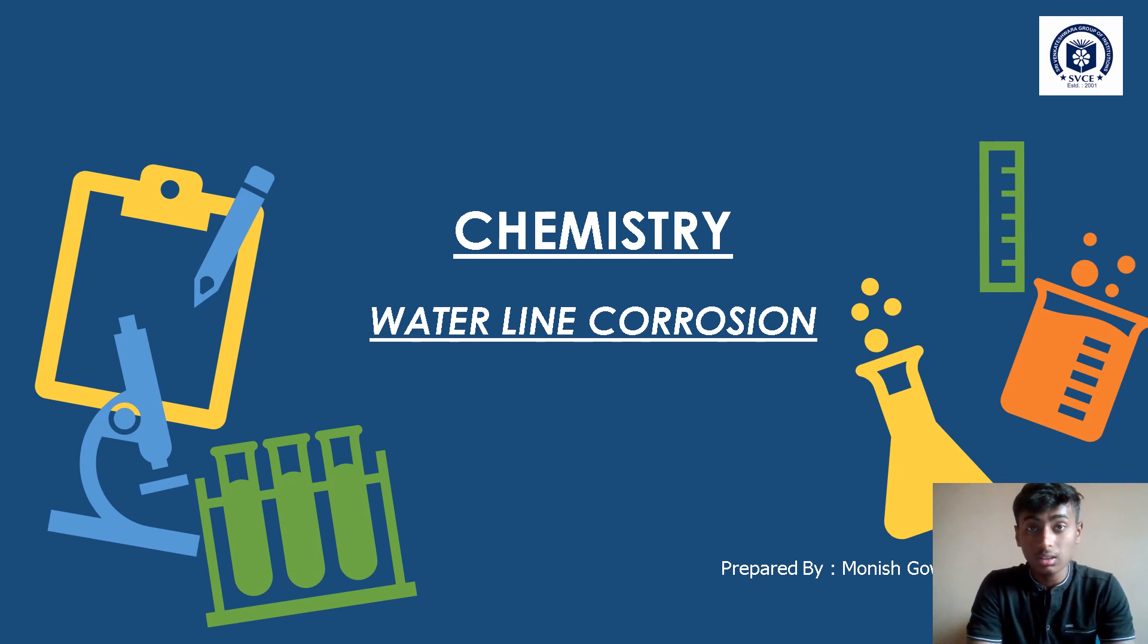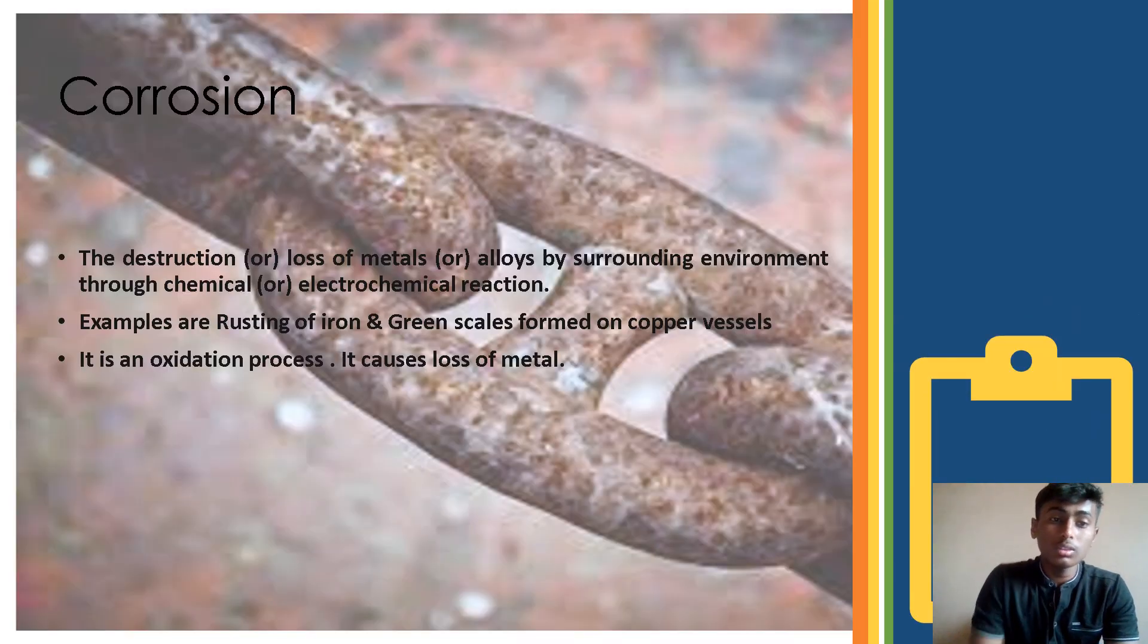You all know about corrosion, right? Corrosion means rusting or the loss of metals. Let us see the definition. Corrosion means the destruction or loss of metals or alloys by surrounding environment through chemical or electrochemical processes or reactions.